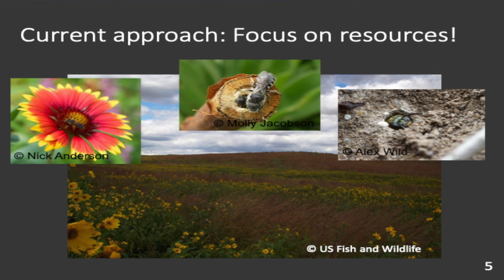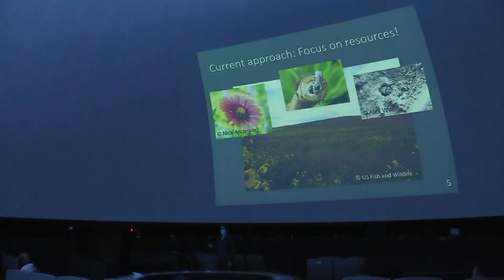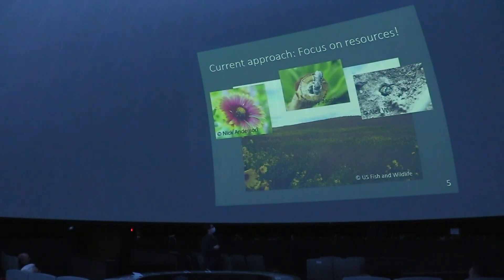Currently, what most people are familiar with is focusing on increasing resource quality and quantity. Here is a picture of a grassland with lots of flowers — increasing floral resources. You might plant pollinator gardens around town or in your yard. More recently there's been increasing interest in nesting resources; bee hotels have gained a lot of popularity — you can buy them on Amazon, Walmart, or local gardening stores. Most species nest in the soil, so there's interest in creating bare areas for those species.